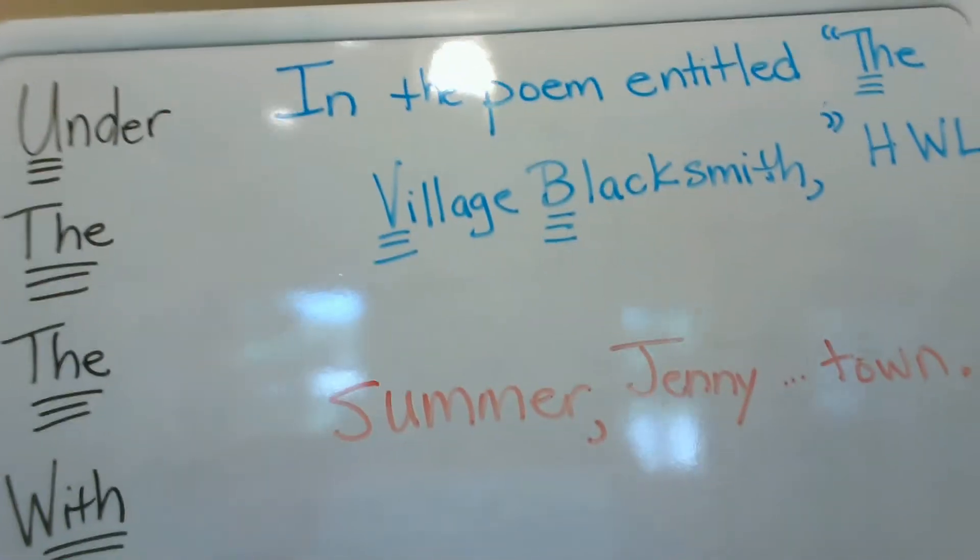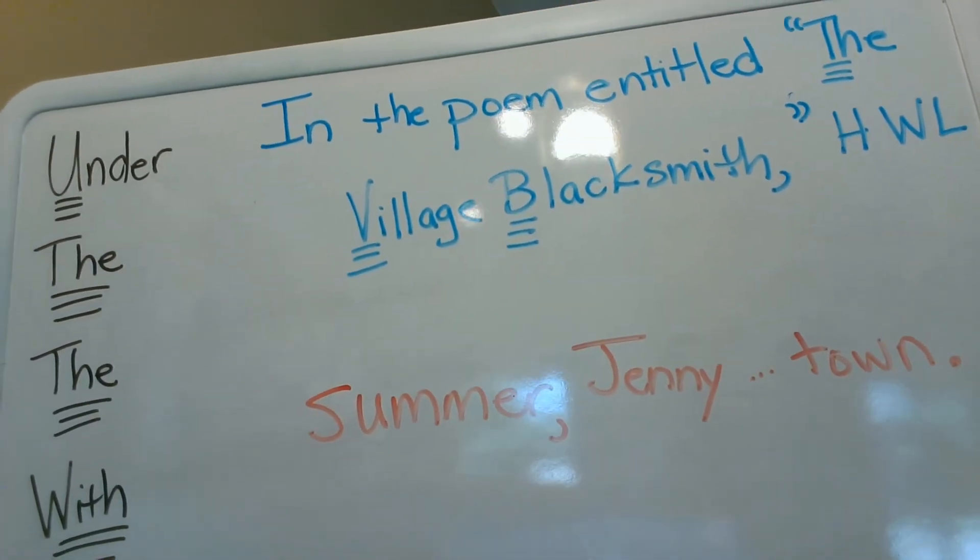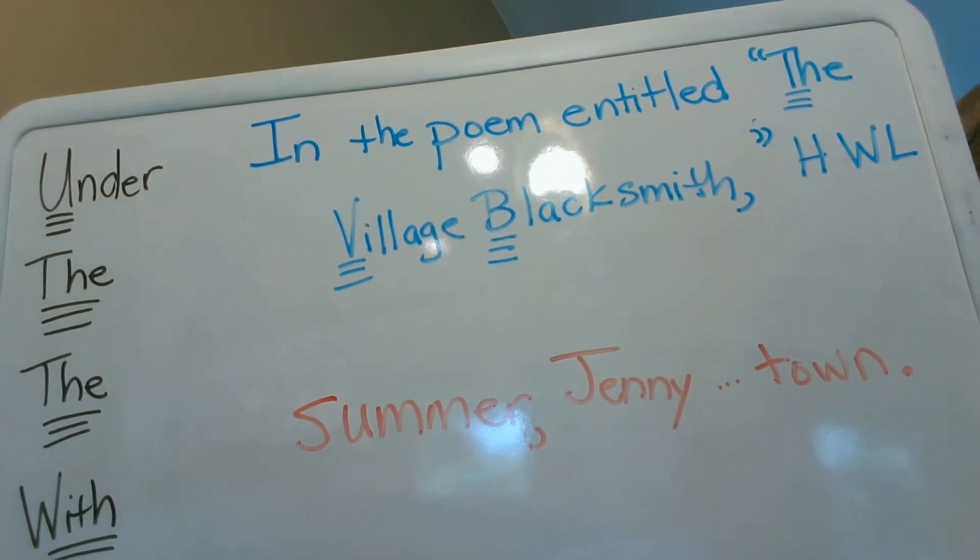So let's take a look at the sentence: 'At the end of the summer, Jenny will move to a small rural town.' How many prepositional phrases are there? 'At the end' is one prepositional phrase. 'Of the summer' is another prepositional phrase. So you have two short introductory prepositional phrases — you're going to put a comma after the second one. So it would look like this: 'At the end of summer, comma, Jenny will move to a small rural town, period' at the end of the sentence.